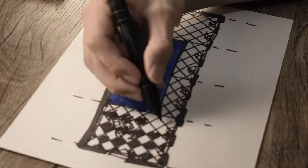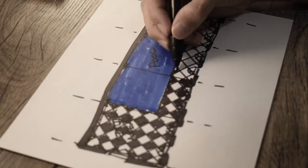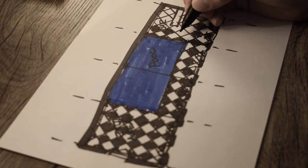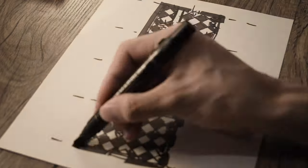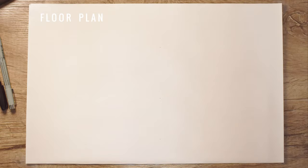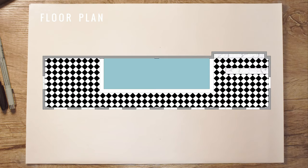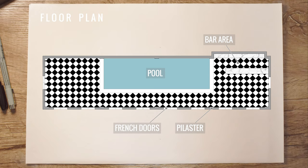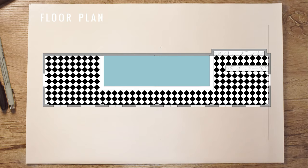The entire floor is going to be this diamond pattern harlequin tile — we'll go over the history and some precedent examples in a little bit. Here's a cleaned-up rendered version of the floor plan: the bar area is to the right, French doors along this wall, a pool in the center, and pilasters separating the four sections.